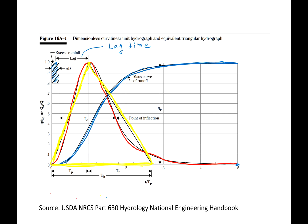Another feature visible on the slide is tc — the time of concentration. At the time of concentration there is a point of inflection on the hydrograph. When you reach tc, all the surface runoff has reached the watershed outlet and base flow contribution begins. The base time of the triangle is related to tp, and in the next slide the triangular approximation is used to derive expressions for Qp and tp.